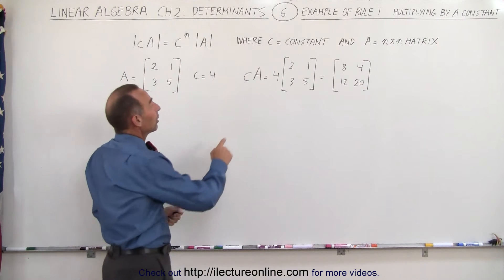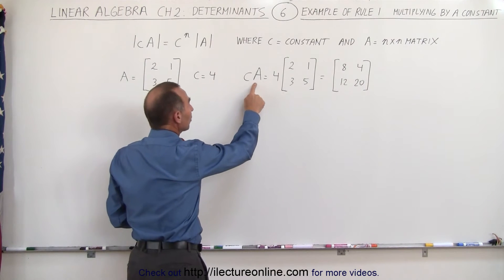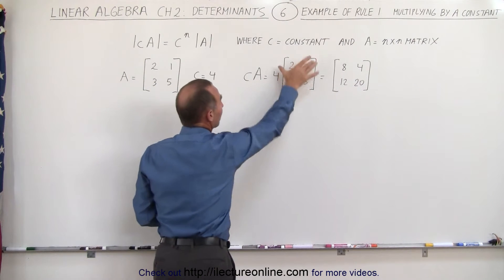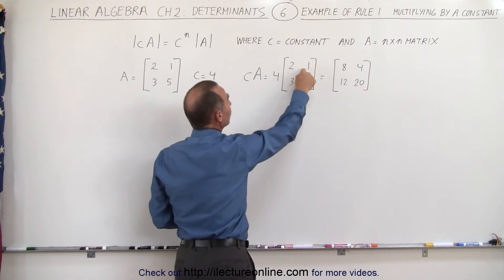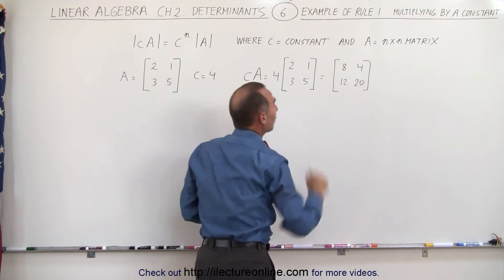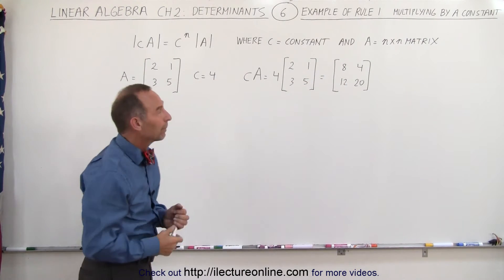If we then multiply the constant times the matrix, that will be equal to 4 times the matrix. We simply multiply each element in here by 4 and we get the constant multiplied by the matrix.